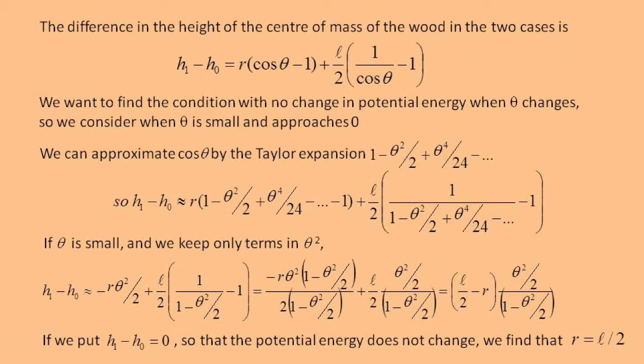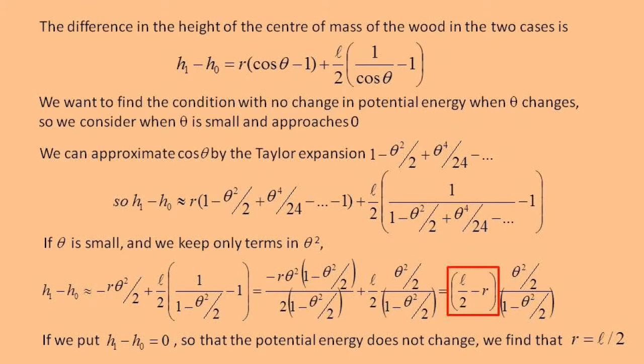We can simplify the value of h1 minus h0 if we consider that the angle theta is small, and use the approximation cos theta equals 1 minus theta squared over 2. In this case, if we set h1 minus h0 equals 0, since theta is not 0, the bracket, l over 2 minus r, must be 0, and so the condition for neutral equilibrium is l equals 2r.